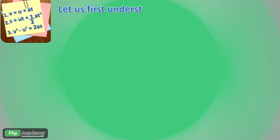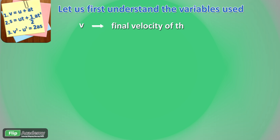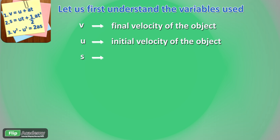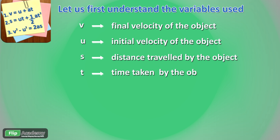Let us first understand the variables used in the equations. V stands for the final velocity of the object. U stands for the initial velocity of the object. S stands for the distance traveled by the object. T stands for the time taken by the object. And A stands for the uniform acceleration.